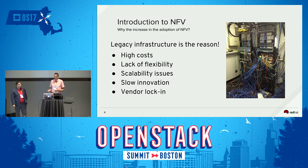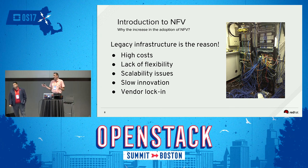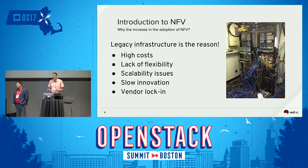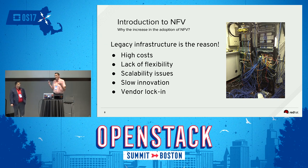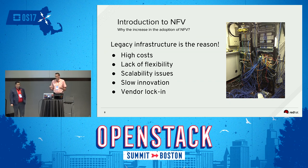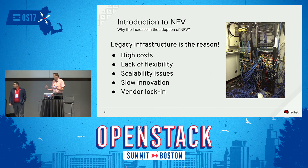Scalability issues: to be able to scale and respond to high traffic loads, you need to be elastic around your workloads, and that applies to compute but also to network. Slow innovation: with a way to provide on-demand and self-service compute, network and storage infrastructure, you're able to allow your developers to innovate faster — that's also a big driver.